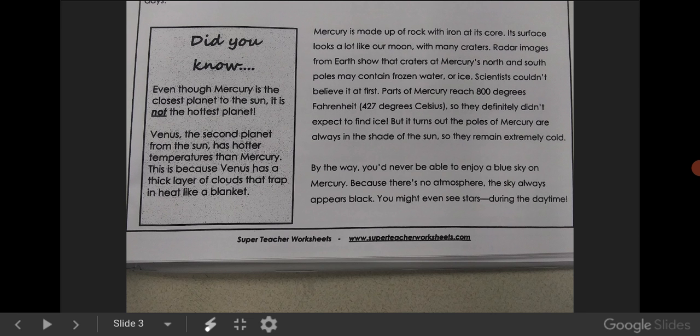Did you know? Even though Mercury is the closest planet to the Sun, it is not the hottest planet. Venus, the second planet from the Sun, has hotter temperatures than Mercury. This is because Venus has a thick layer of clouds that trap in heat like a blanket.